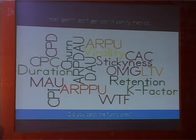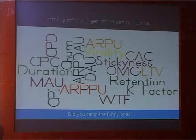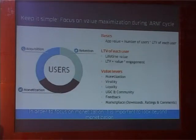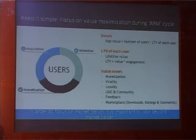The problem is you're going to get stuck with metrics, and there are a lot of metrics you can go through. The question is which ones do you use, when do you use them, and most importantly what do you make out of them? Really good app developers keep it very simple — they look at the ARM cycle: acquisition, retention, monetization. Through this entire funnel it's the same user, and what you need to do is simply focus on optimizing that user's lifetime value, also called LTV in the industry.